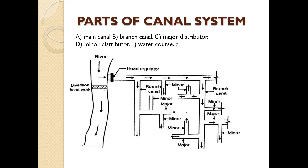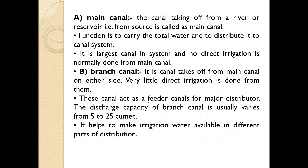Parts of the canal system: The main canal, branch canal, major distributor, minor distributor, and water courses. The canal taking off from the river or reservoir is called the main canal. Its function is to carry the total water and distribute it to the canal system. It is the largest canal in the system and no direct irrigation is normally done from the main canal. The branch canal takes off from the main canal on either side; very little direct irrigation is done from it. These canals act as feeder canals to the major distributors, with discharge capacity usually varying from 5 to 25 cumecs.